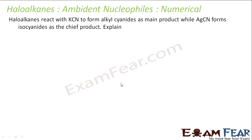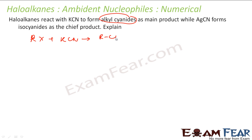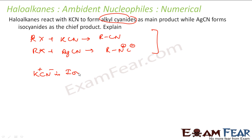Let's take an example on ambident nucleophiles. The question is: Haloalkanes react with KCN to form alkyl cyanides as the main product, but AgCN forms isocyanides as the main product. Explain. So the reaction is: RX + KCN → RCN (alkyl cyanide), but RX + AgCN → RNC (isocyanide). Why?